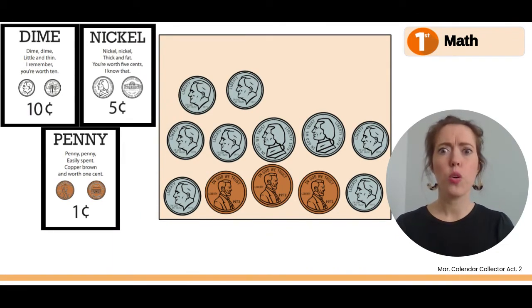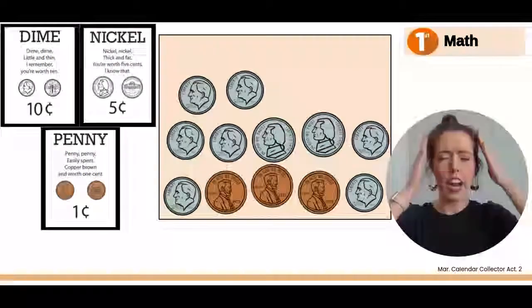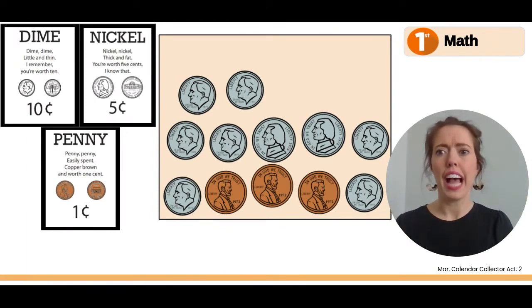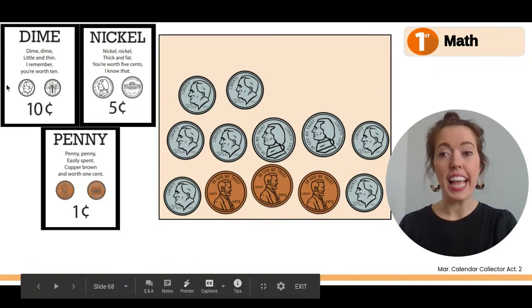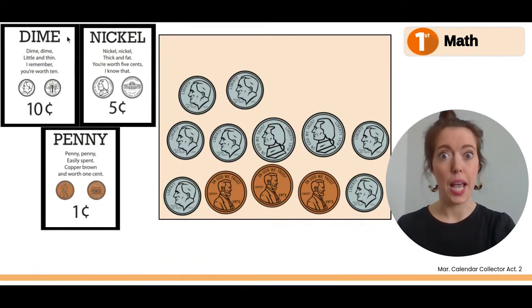What if we count these coins and just keep adding on in our head? Let's do that. Dimes are worth ten, so they're worth the most. So we're going to count by tens first when we see a dime. Let's count. Ten, twenty, thirty, forty, fifty, sixty, seventy. Good.